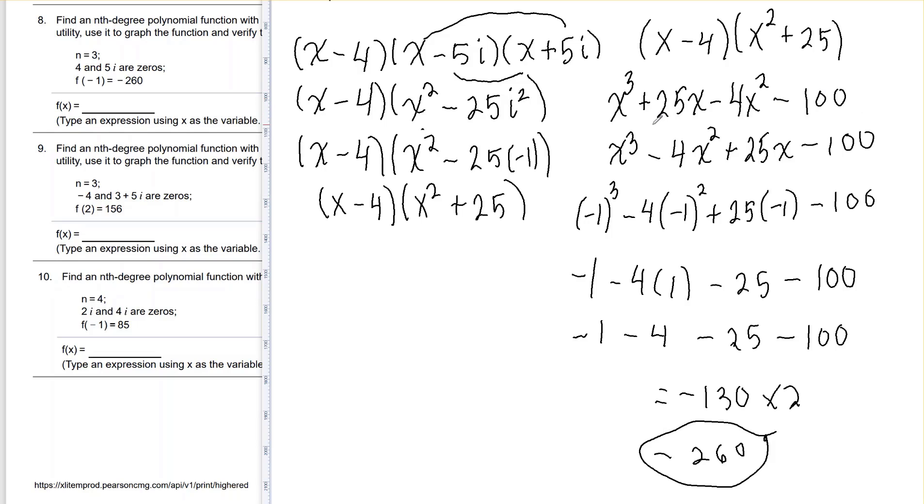So my polynomial has to be multiplied by 2. So my final answer is f of x equals 2x cubed minus 8x squared plus 50x minus 200. Now if you put in negative 1, it would come out to negative 260 because we've multiplied all of these by 2. And this is my final answer for number 8.